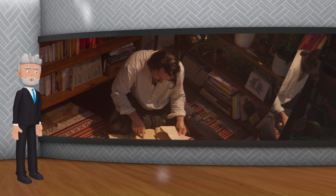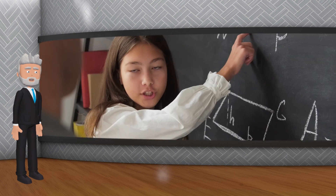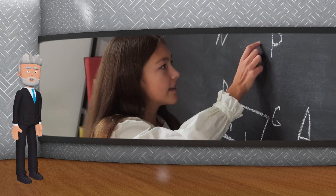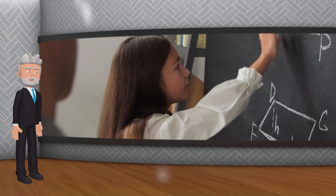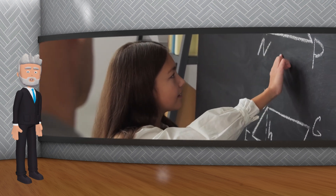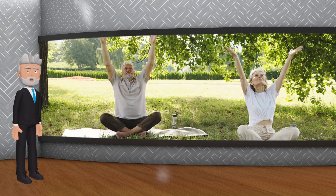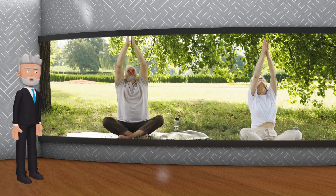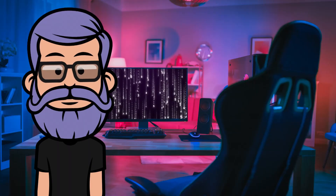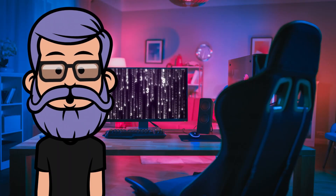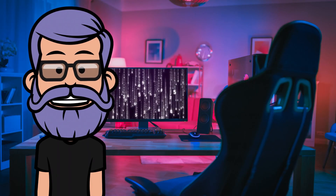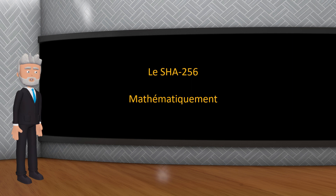Je vais entrer un peu plus dans le détail mathématique ici pour les plus avertis. Si vous trouvez ça trop compliqué, restez en tant qu'observateur car ça redevient accessible après. C'est le moment de sortir les lunettes et la calculatrice. Le processus mathématique du SHA-256 est basé sur des opérations logiques et arithmétiques. Voici un aperçu des étapes mathématiques impliquées dans le SHA-256.